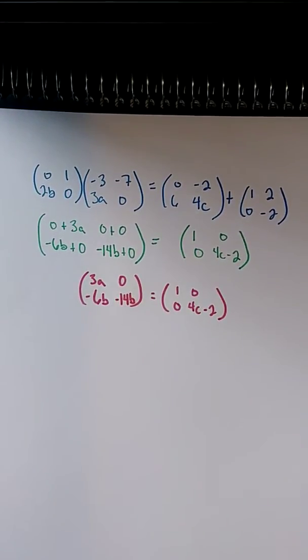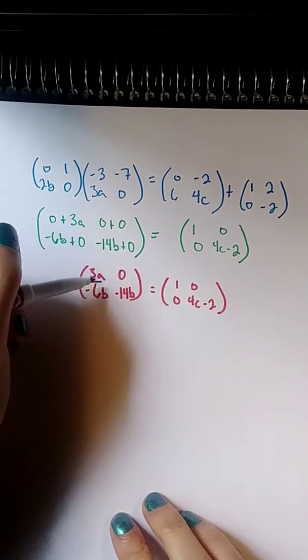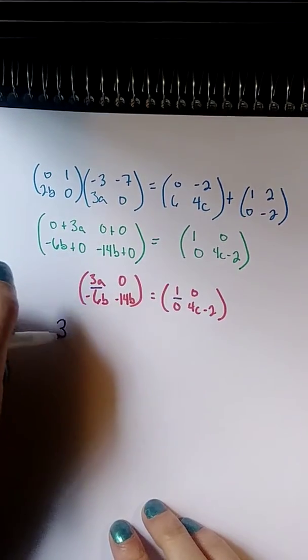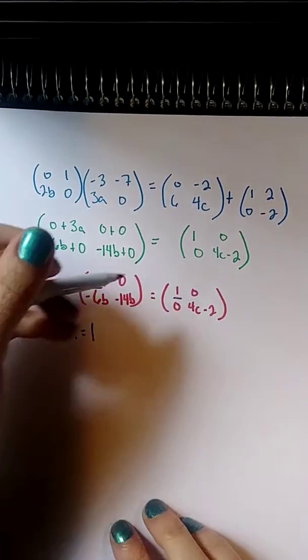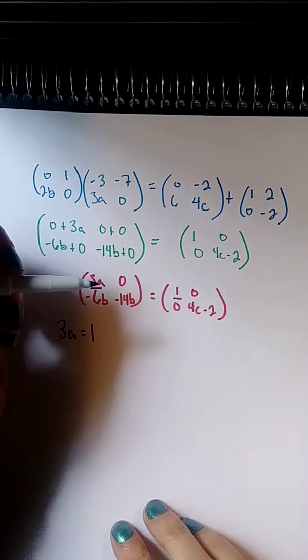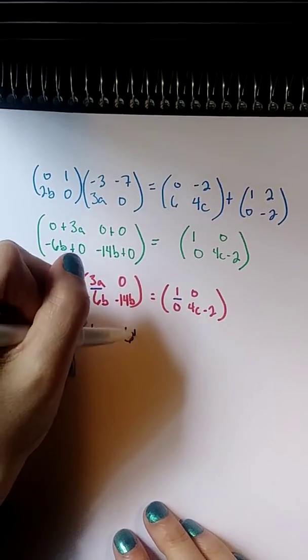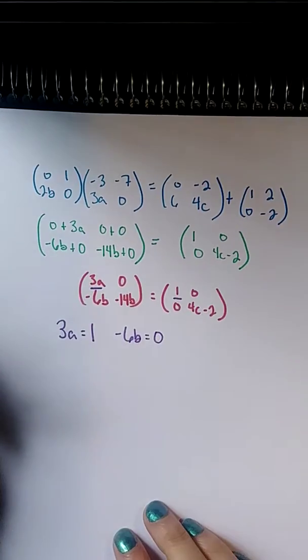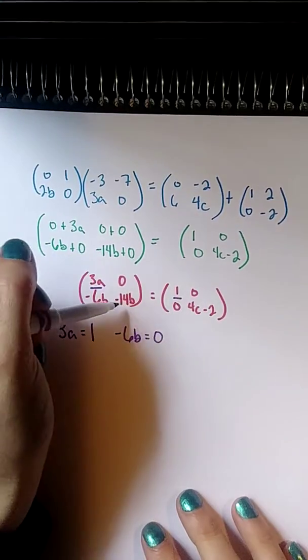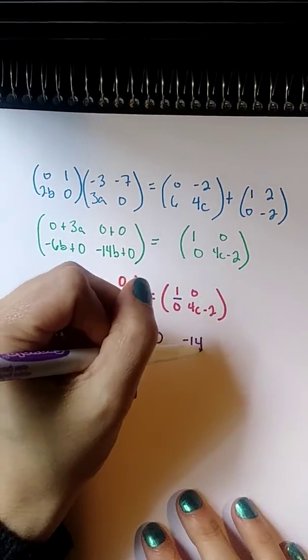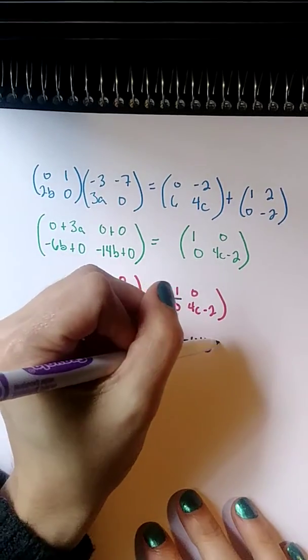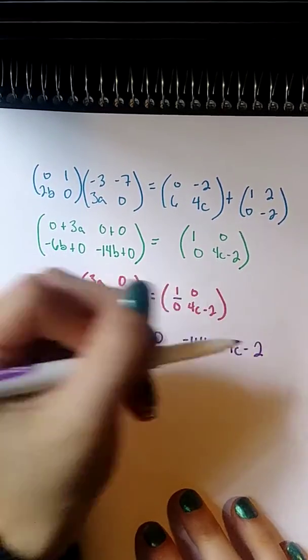So, at this point, I've simplified all that I can. It's time for me to compare individual elements and see what equations I can come up with. So, this first element here, my 3a must equal 1. My next element, 0 equals 0, that's true, and I've got nothing to solve for. Here, I have -6b equals 0. Interesting. And I have -14b equals 4c minus 2.